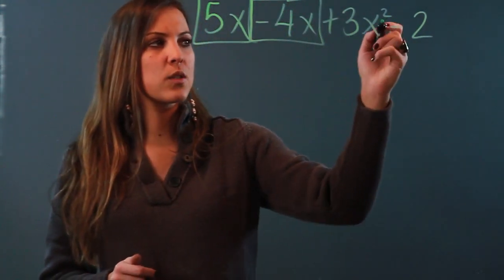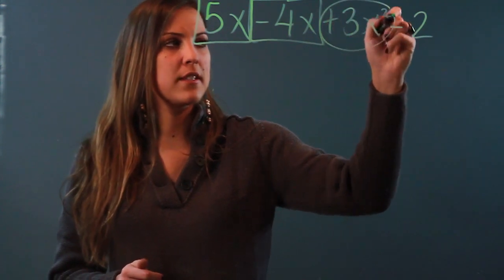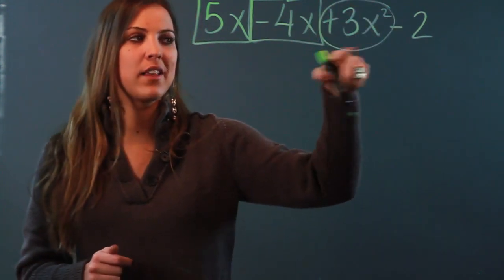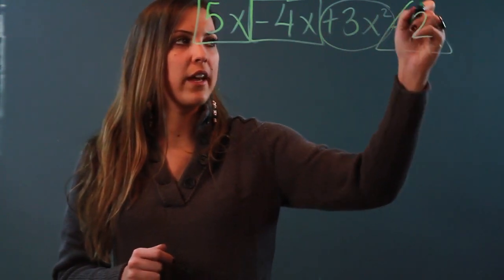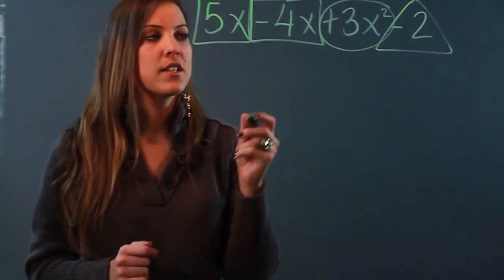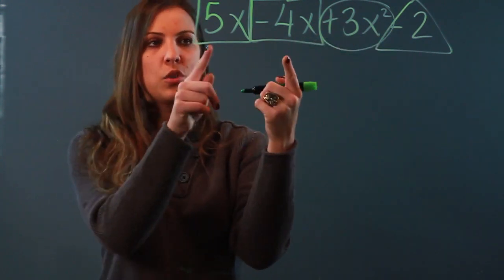Now, my 3x², I'm going to put that in a different shape since it's a different term. Doesn't have any like terms. And my -2, which is just a constant, I'll put that in a triangle - that doesn't have any like terms either. So these are not going to combine with anything. These two will.